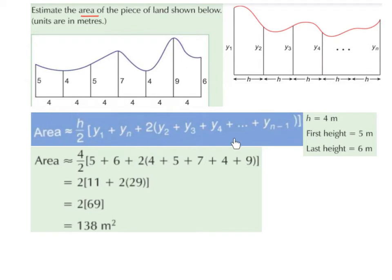This is a tricky enough formula but if we think about it in words as to what it means — it relates to this diagram that we have here. The h over 2 is really the width, so in this case we have a width of 4, so it's going to be 4 over 2.